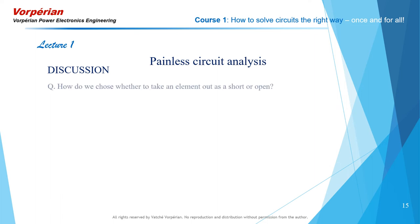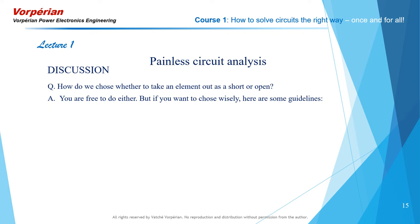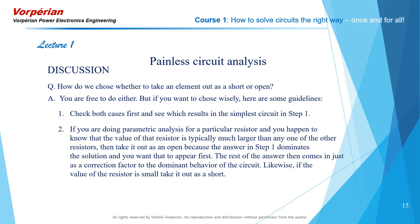How do we choose whether to take an element out as a short or an open? You're free to do either, but here are some guidelines. Check both cases and see which results in the simplest circuit. If you are doing parametric analysis and the resistor's value is typically much larger than the others, take it out as an open, because the step 1 answer dominates the solution. Likewise, if the value is small, take it out as a short for the same reason — the step 1 answer dominates and the rest comes in as a correction factor.